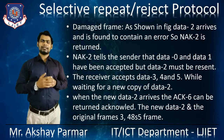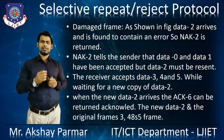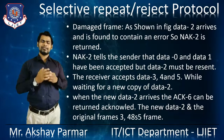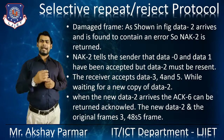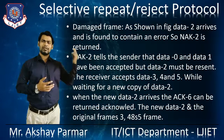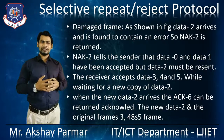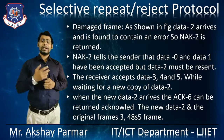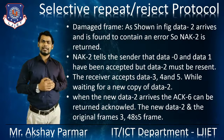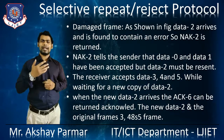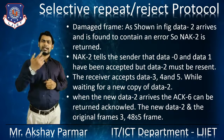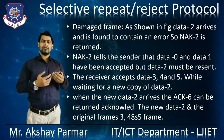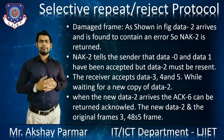Now let's take an example where data frame 2 arrives and it is found to have an error — it is erroneous and corrupted during transmission. So negative acknowledgement 2 is returned from the receiver end, telling the sender that data frame 2 is corrupted. The negative acknowledgement 2 tells the sender that data frame 0 and data frame 1 have been accepted successfully, but data frame 2 must be resent. The receiver accepts data frames 3, 4, and 5 while waiting for a new copy of data frame 2.